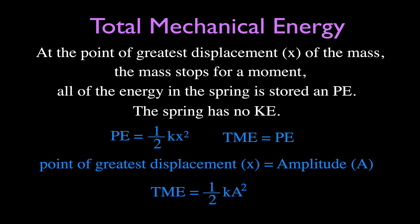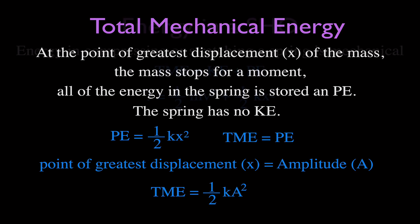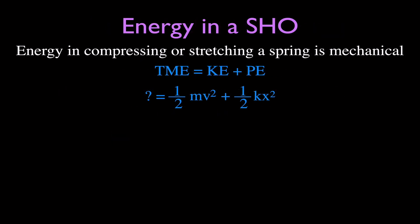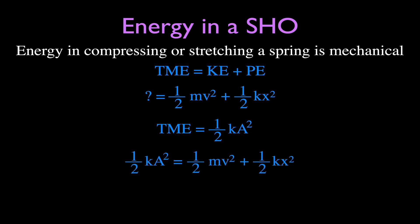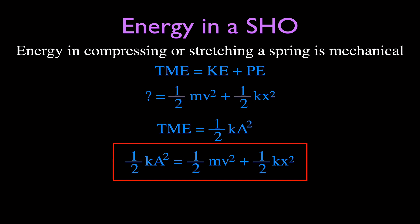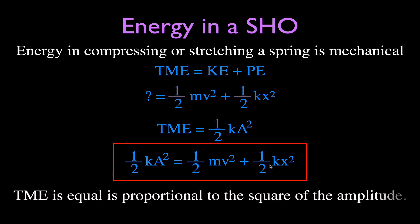We now have a complete equation for the total mechanical energy: one-half KA squared. This means the total mechanical energy is proportional to the square of the amplitude. In the next part of the video, we're going to go over some specifics for the amplitude and the equilibrium position.